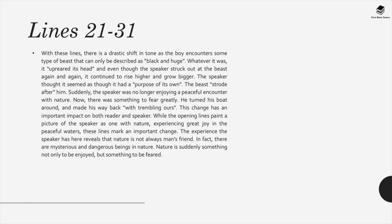In lines 17–20, the boy understands his ability to control nature — even with a small boat, he cuts through the water like a swan. But in lines 21–31 there's a drastic shift in tone: the speaker encounters something described as 'black and huge,' which reared its head. Even as he struck out and rowed again and again, the thing continued to rise and grow more menacing, with a purpose of its own. The speaker is suddenly afraid and turns back with trembling oars.